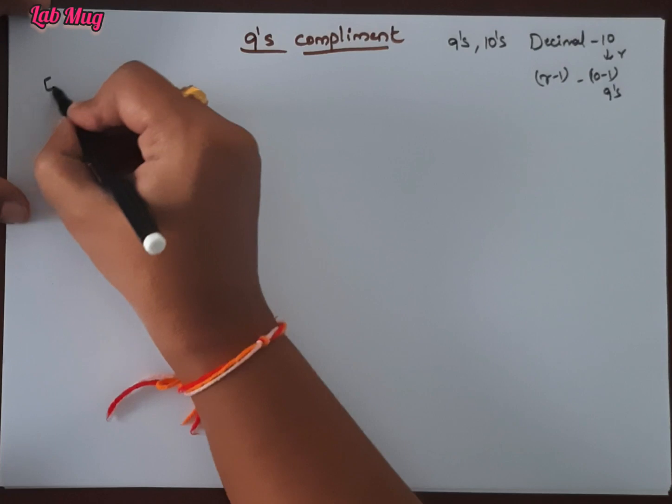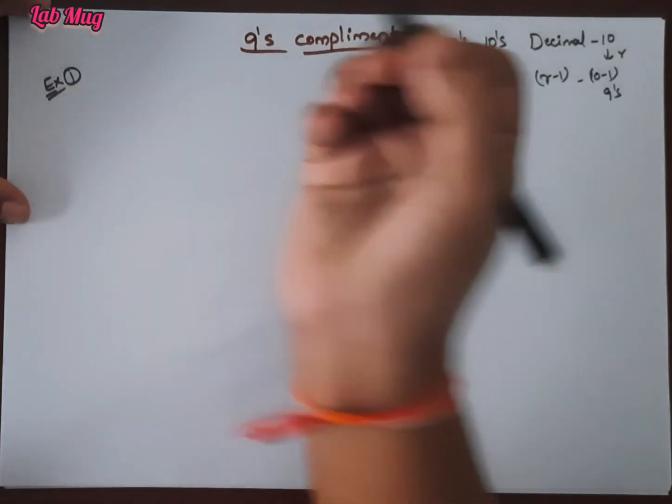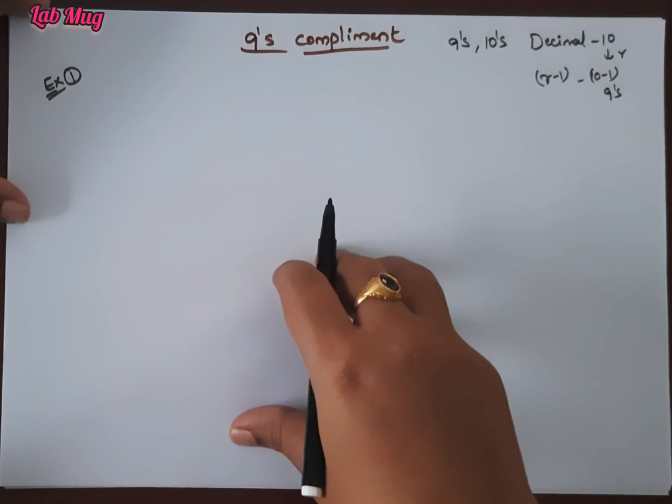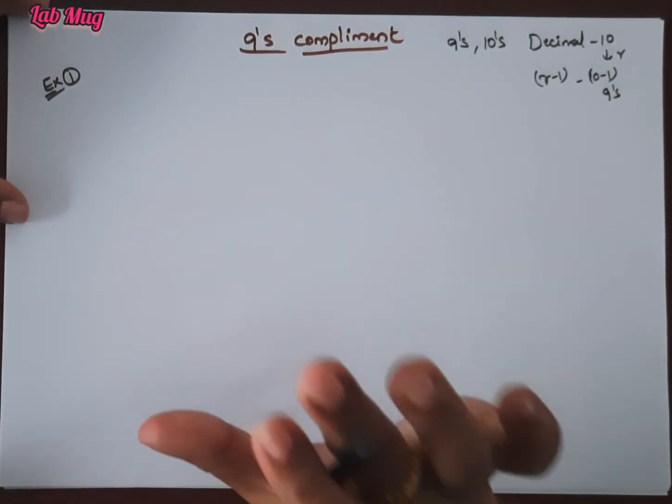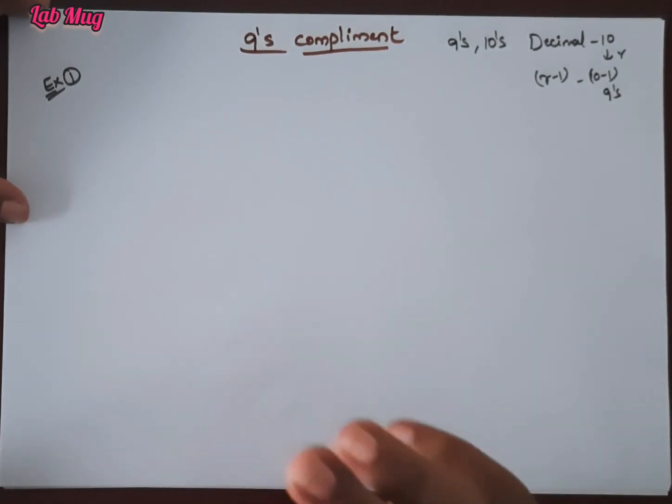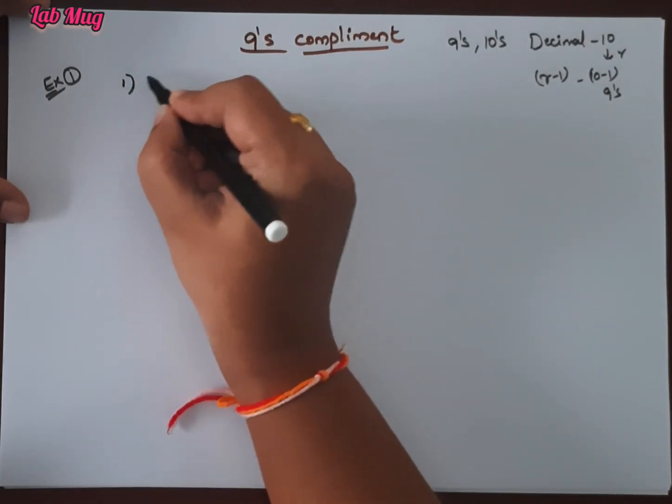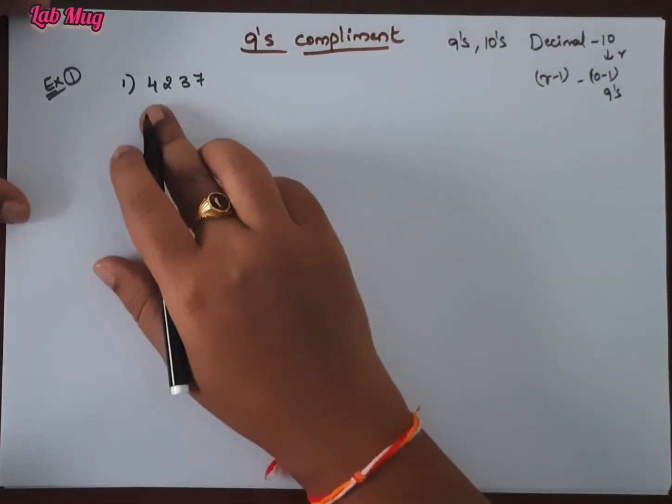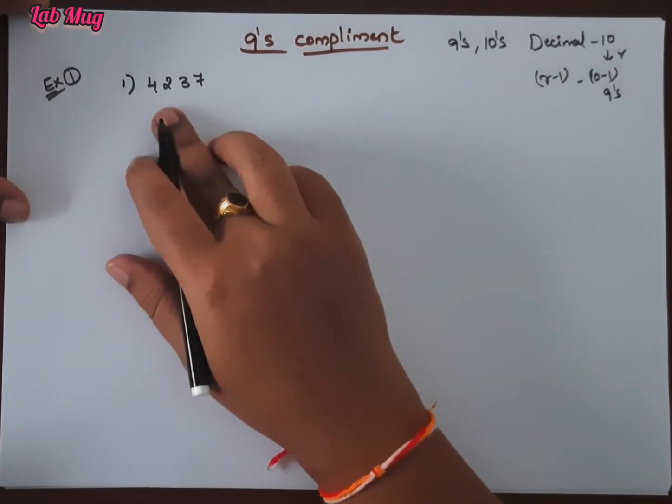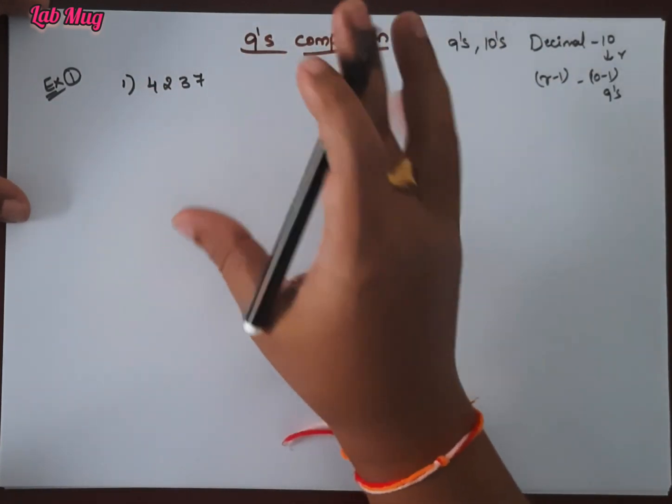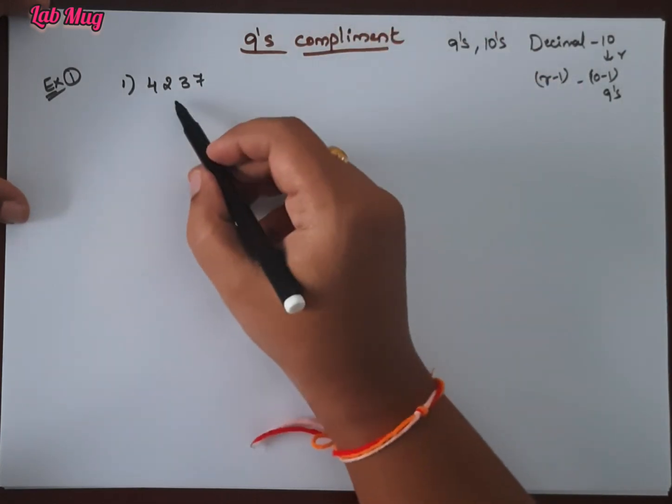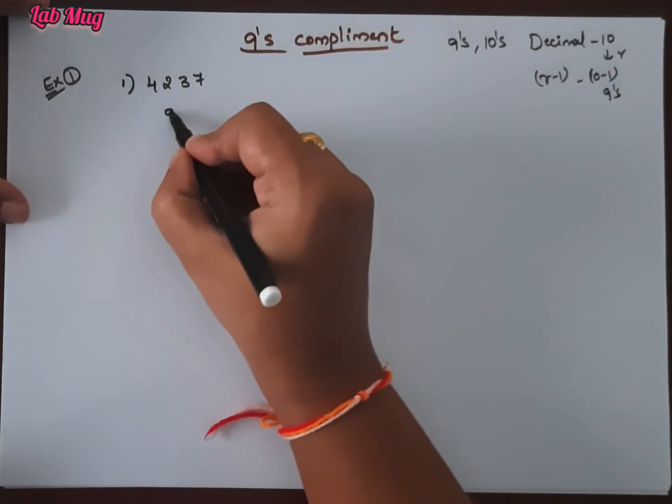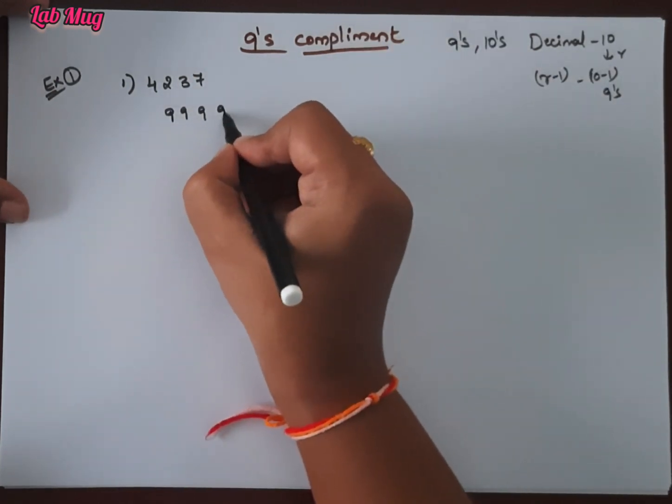For that, let me take example 1. When a question asks us to find 9's complement of a decimal number, how do we calculate it? First of all, I am taking the number 4237. This decimal number has 4 digits. So you can keep 4 nines.